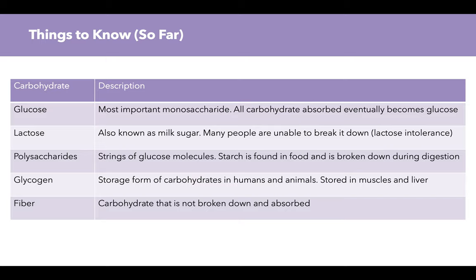Key things to know so far: glucose is the most important monosaccharide, and all carbohydrate absorbed into the bloodstream will eventually become glucose, which we use to produce energy. Lactose is also known as milk sugar, and many people are unable to break it down — a condition known as lactose intolerance. Polysaccharides are strings of glucose molecules. Starch is found in food and broken down during digestion. Glycogen is the storage form of carbohydrate stored in muscles and liver. Fiber is not broken down and absorbed but plays many important roles.